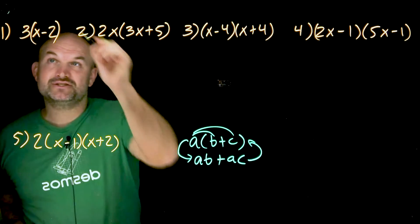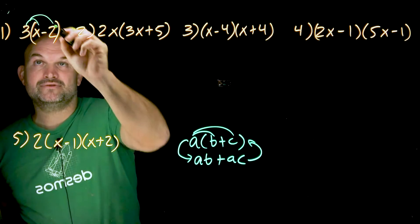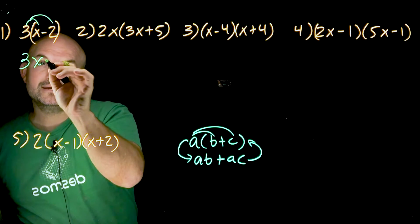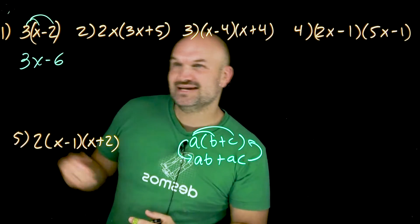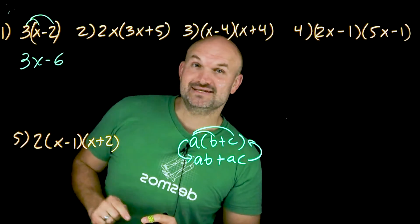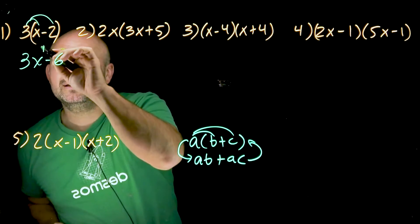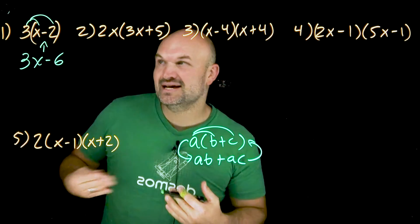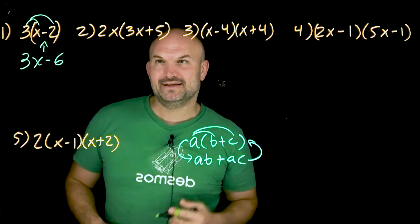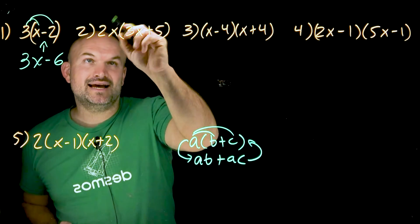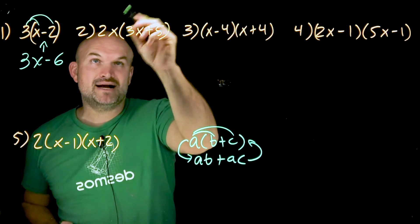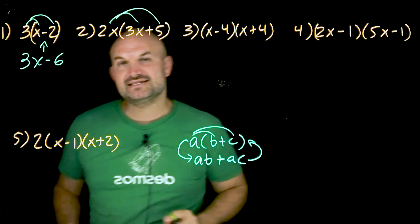So in this first example, I have three times X minus two. We're going to multiply three times X and three minus two. So therefore I'll have a three X minus a six. And again, remember what I said, if I wanted to factor three X minus six, what would that look like? It would look like this, three times an X minus two. We'll talk more about that later. But I want you to be able to see, again, I have a monomial times a binomial. I need to multiply everything times everything.